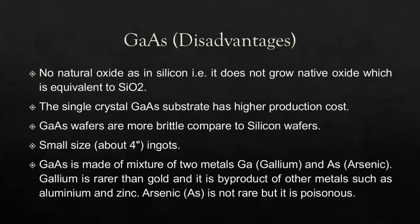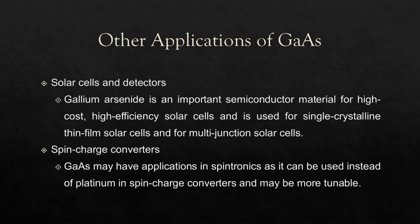For disadvantages: there is no natural oxide as in silicon — it doesn't grow a native oxide equivalent to silicon dioxide. The single-crystal GaAs substrate has higher production cost, and GaAs wafers are more brittle compared to silicon wafers. Ingots also have smaller sizes. Gallium is rarer than gold and is a byproduct of other metals such as aluminum and zinc, while arsenic, though not rare, is poisonous. GaAs is also important for high-efficiency solar cells, multi-junction solar cells, and may have applications in spintronics as a replacement for platinum in spin-charge converters.